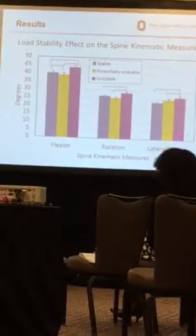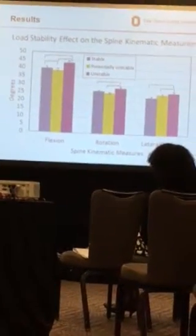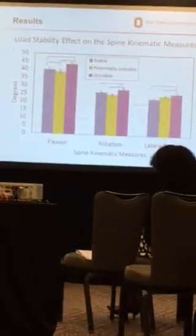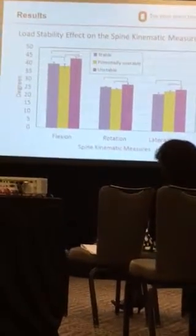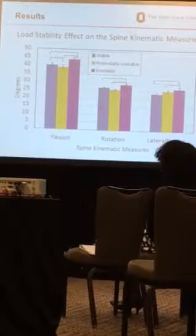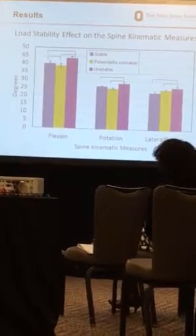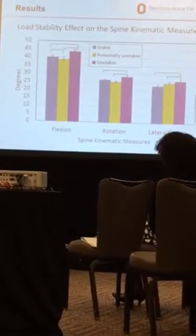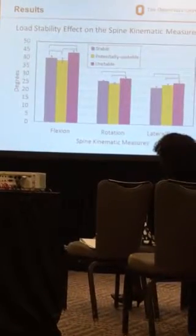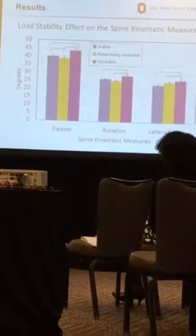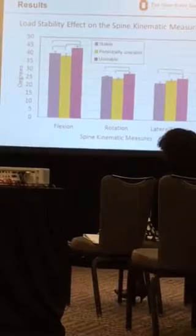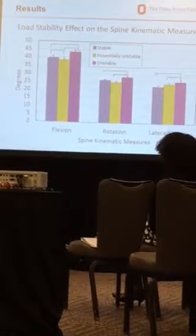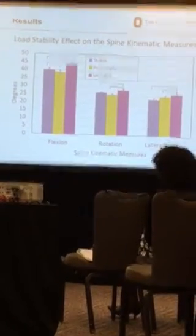The spinal flexion was pinned back by less than 5 degrees. Comparing stable versus potentially unstable conditions, we found that lifting a stable load increased the spinal flexion.